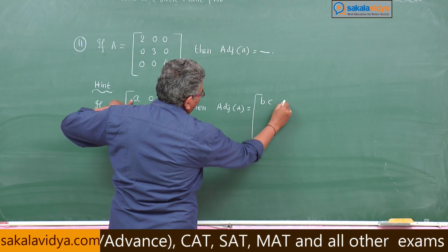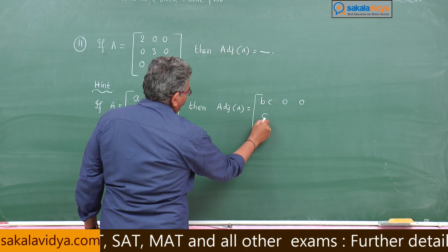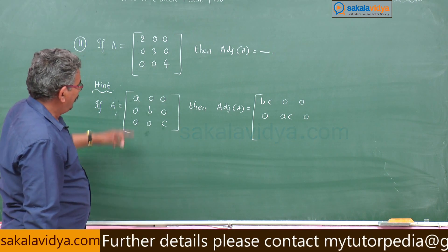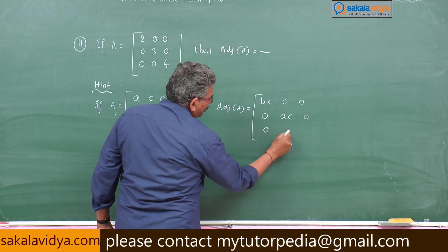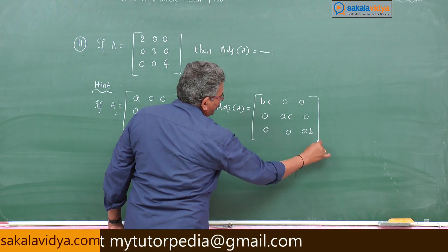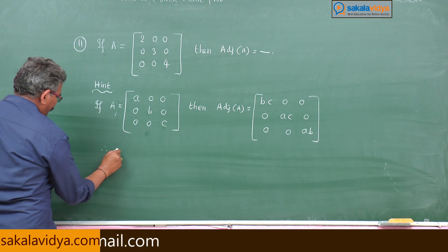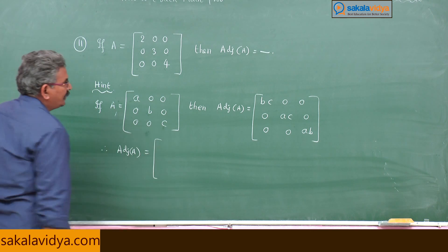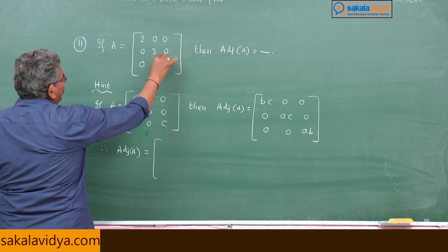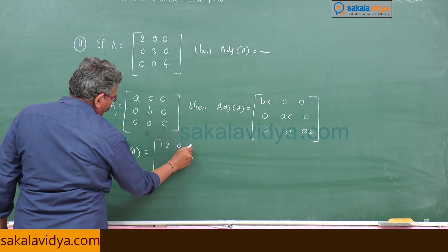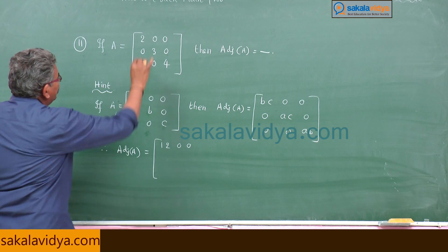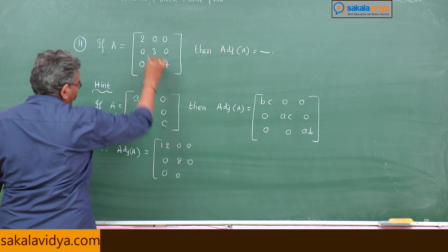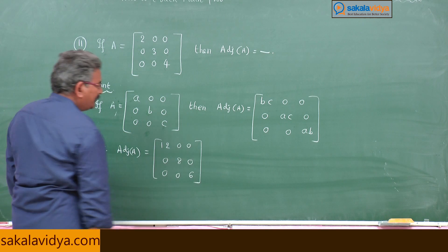Applying the shortcut: BC = 3×4 = 12, AC = 2×4 = 8, AB = 2×3 = 6. So the adjoint of A = diag(12, 8, 6), with zeros everywhere else. This is very simple and can be done quickly.